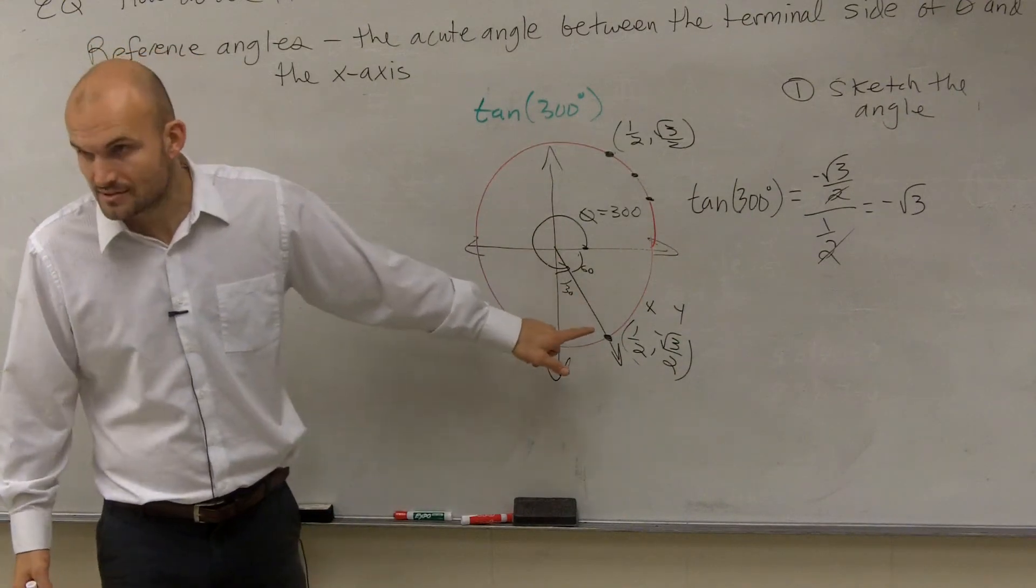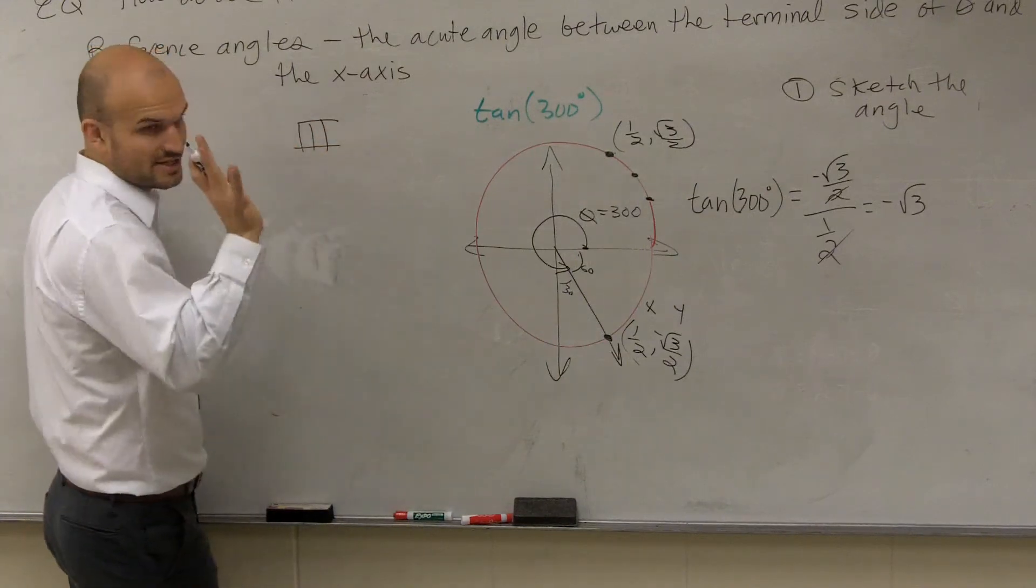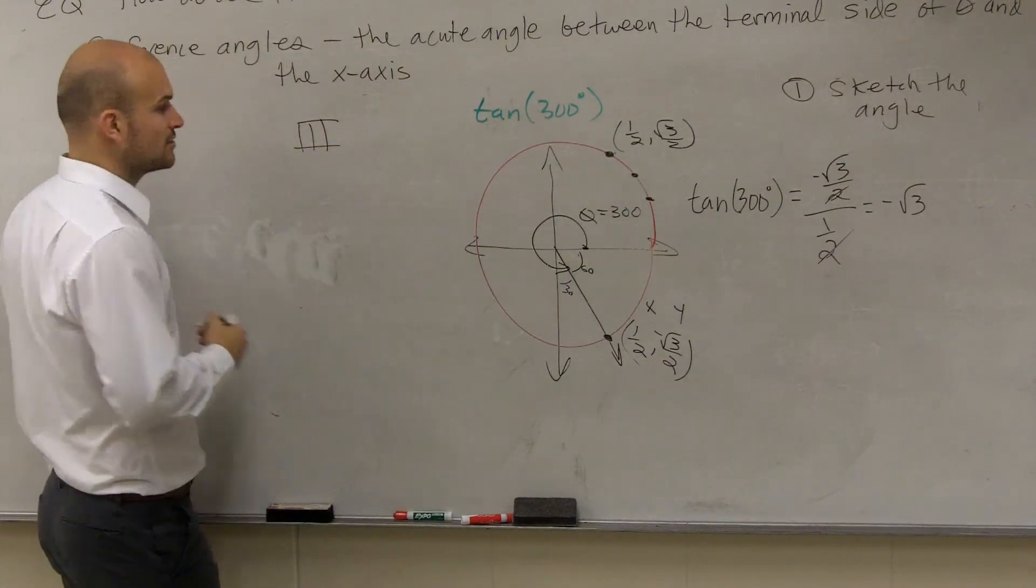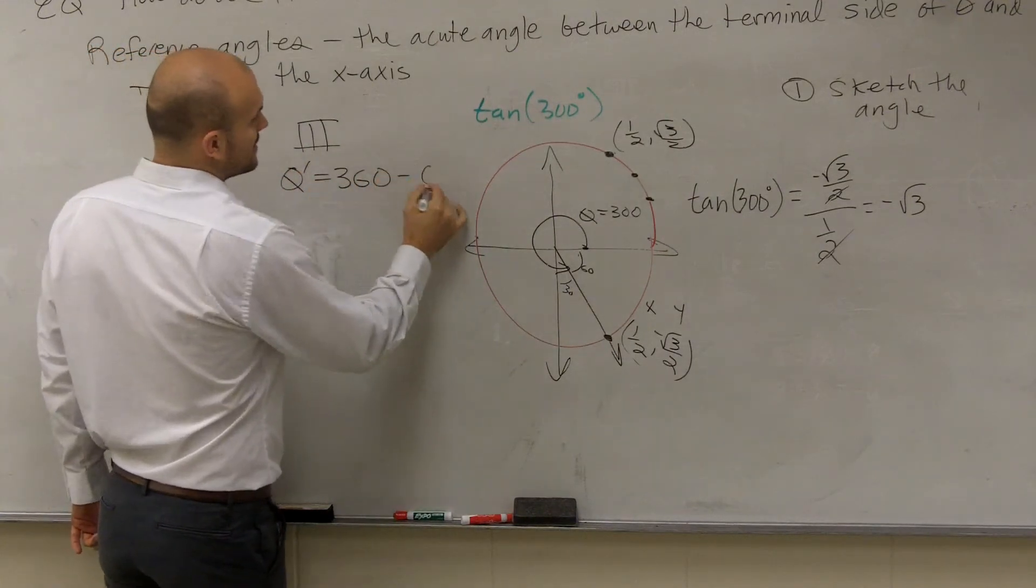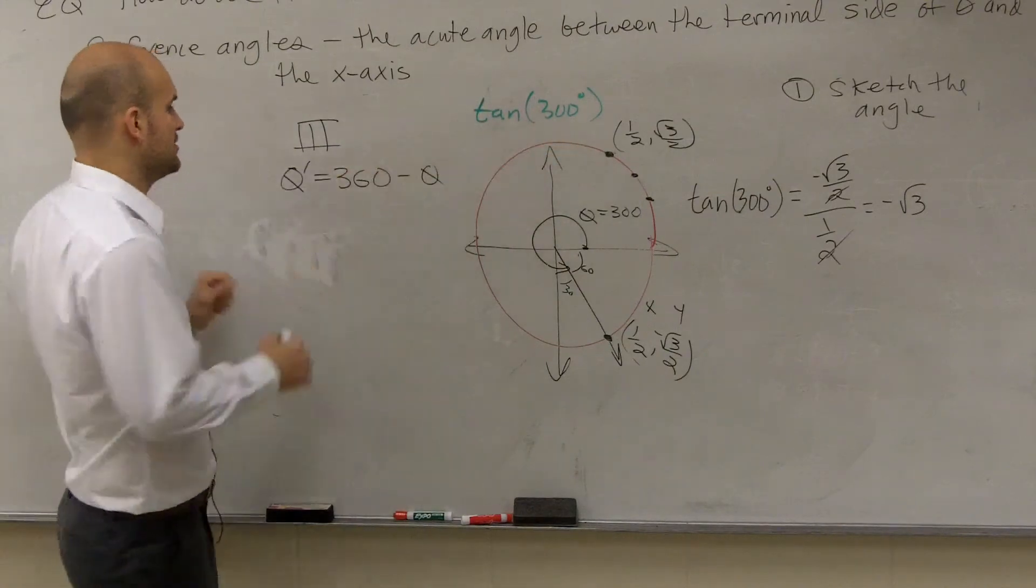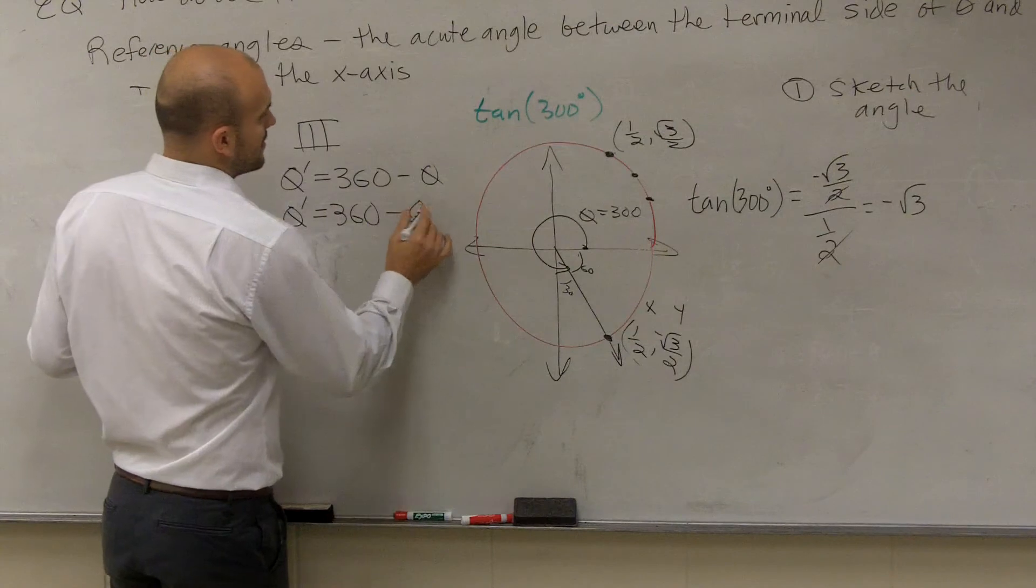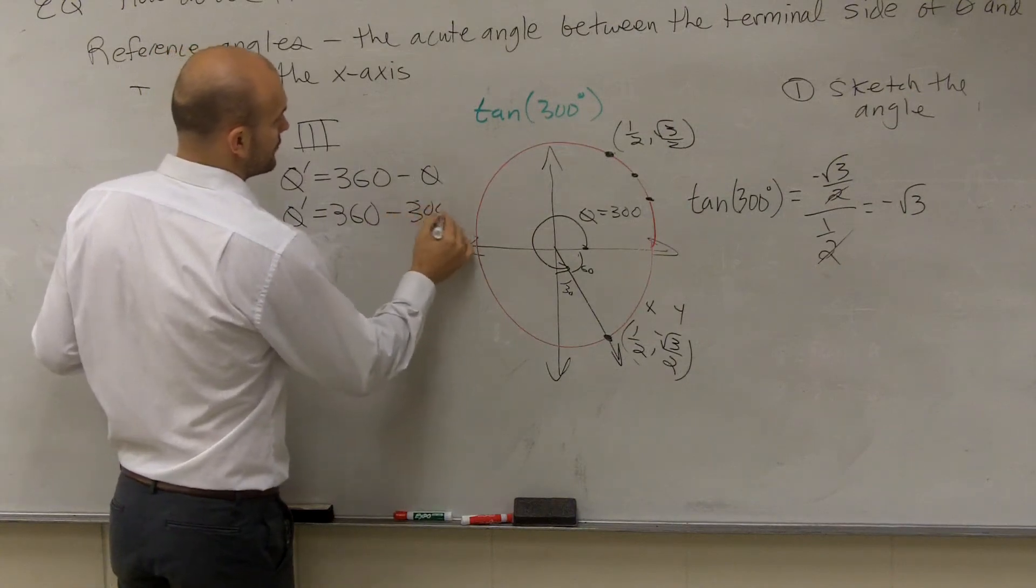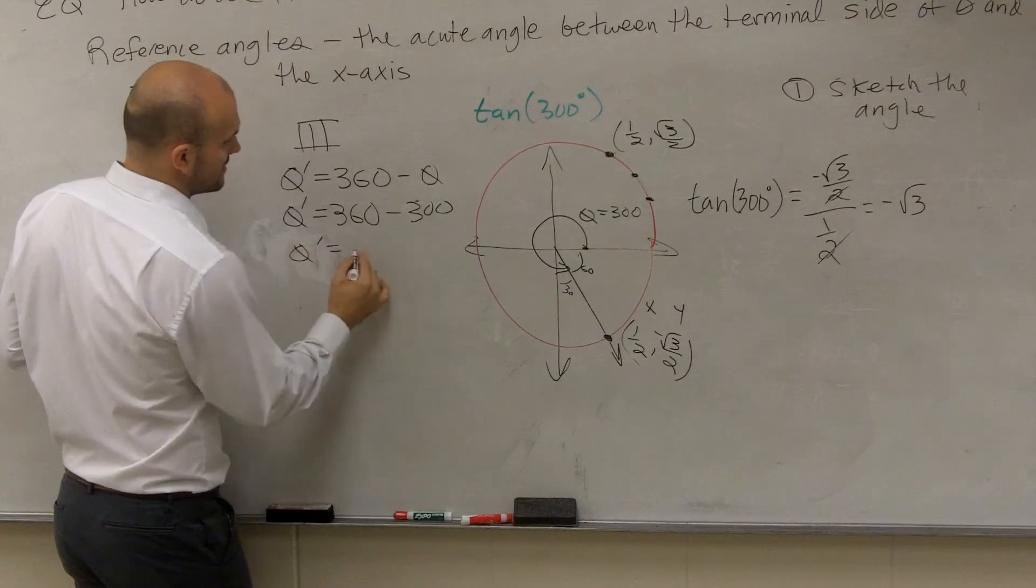This is in the fourth quadrant. So the definition of a reference angle in the fourth quadrant is theta prime equals 360 minus theta. My theta in this example is 300. So therefore, theta prime equals 360 minus 300. Theta prime equals 60.